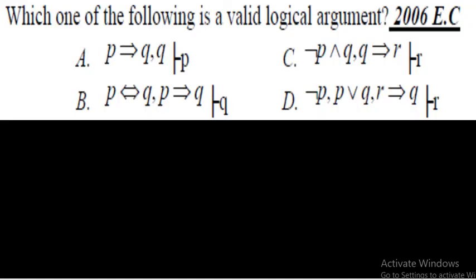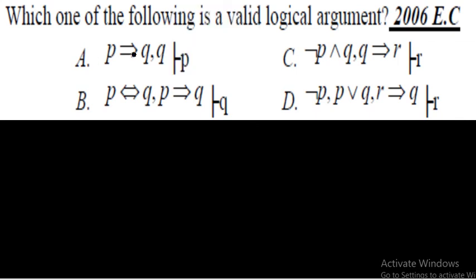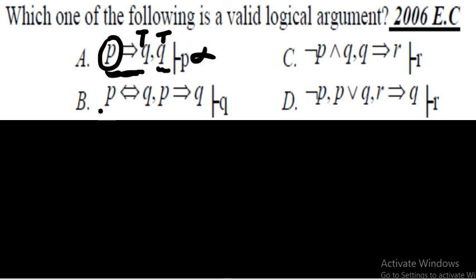Now let us try some exam questions. The first question gives premise p→q and premise q, with conclusion p. Since q is true, p could be true or false — because both true→true and false→true are valid implications. We cannot always guarantee p is true, so we cannot say this argument is valid.